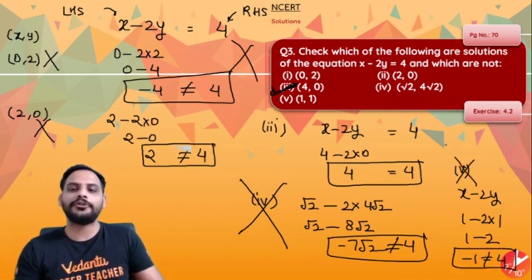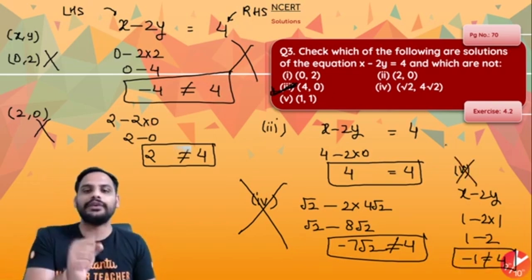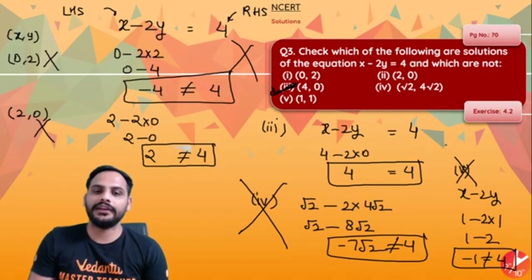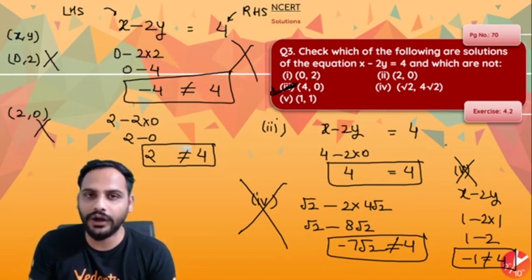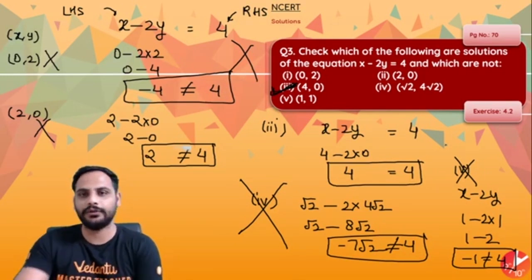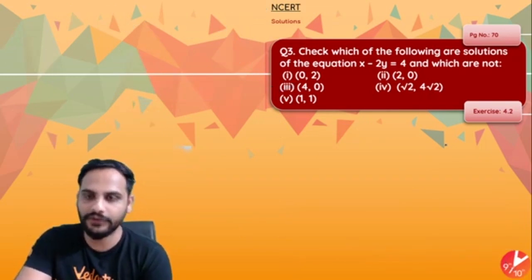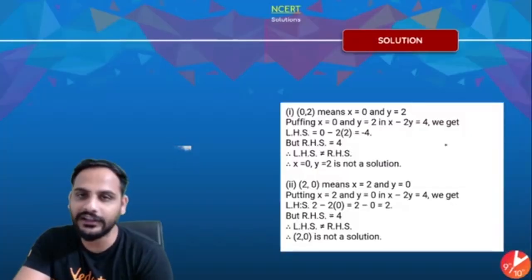So out of all these five options, only the third one is a solution for this question. Whenever we are talking about whether these values are a solution or not, just check whether LHS is equal to RHS or not because it should satisfy this equation.